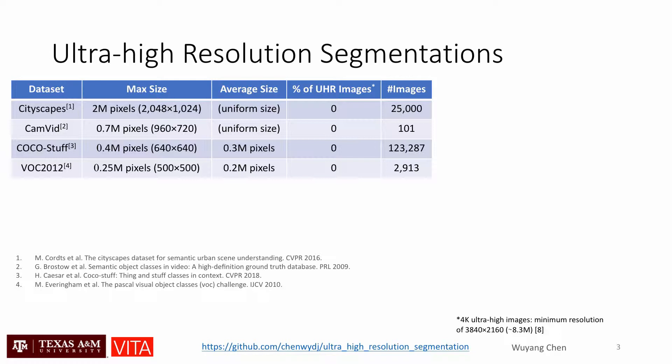The goal of semantic segmentation is to assign each pixel a class label. Most models work on full-resolution images and perform dense prediction, which requires more GPU memory than classification and detection. Popular datasets like Cityscapes, COCO, and VOC contain middle to small images, which make the cost of GPU memory hidden and negligible.